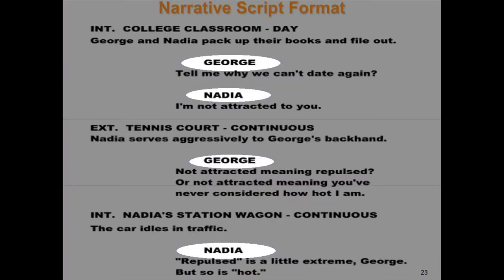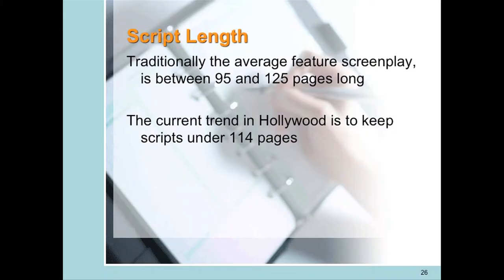When you first introduce a character, the name is written in all caps. Action blocks should be kept short — if you write more than four or five sentences, you probably need a new paragraph. Although it looks like the character's name is centered on the page, it's actually indented in its own column, and the character's name is always written in capital letters, indicating which character is about to speak.